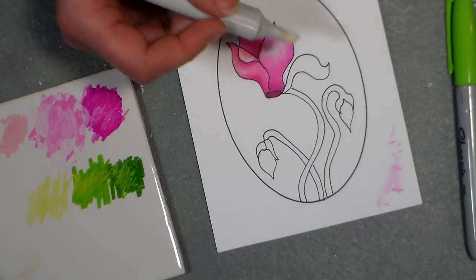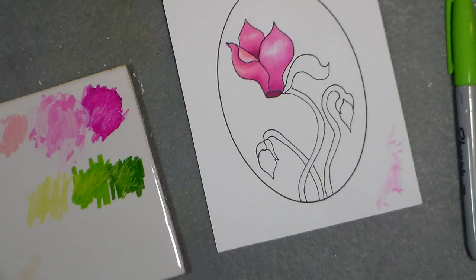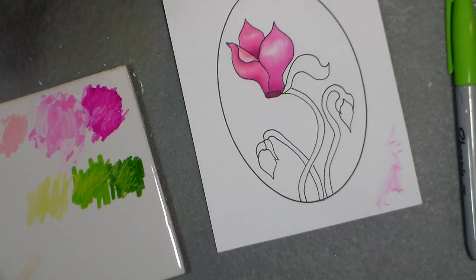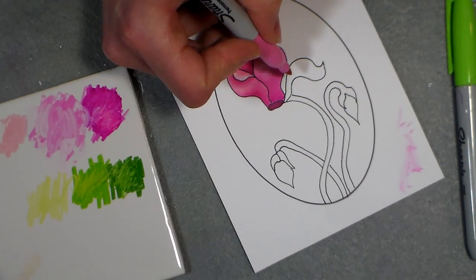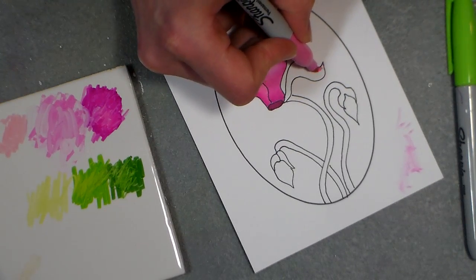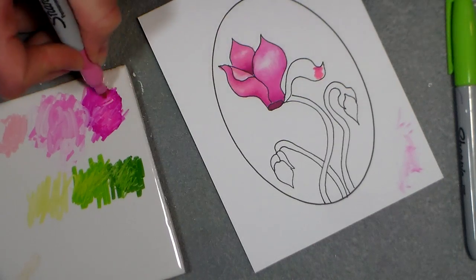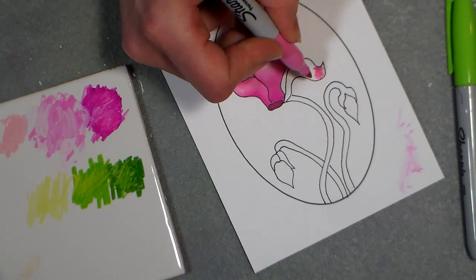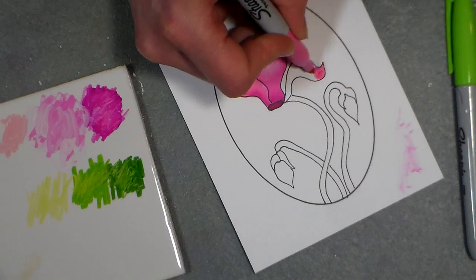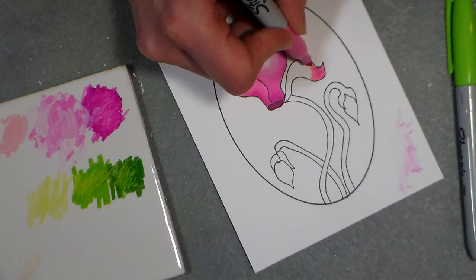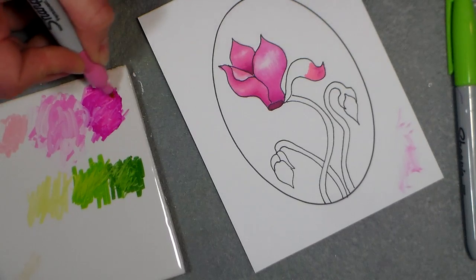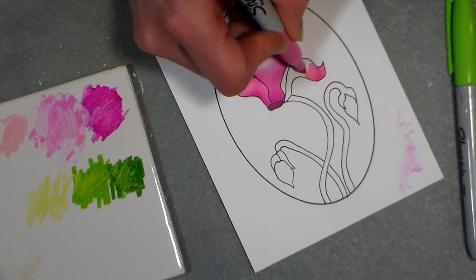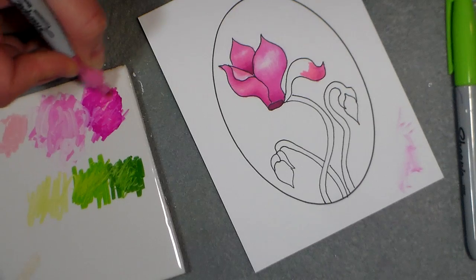We'll do one more over here. I'm going to do the same method with my medium color. I think I want the dark maybe down here in this area, so I'll start over here. A set of Sharpies is not going to set you back as much as a set of the art markers, and you can really get a lot done with them.